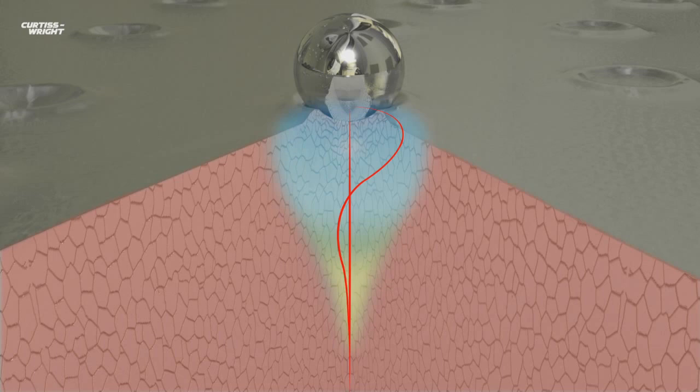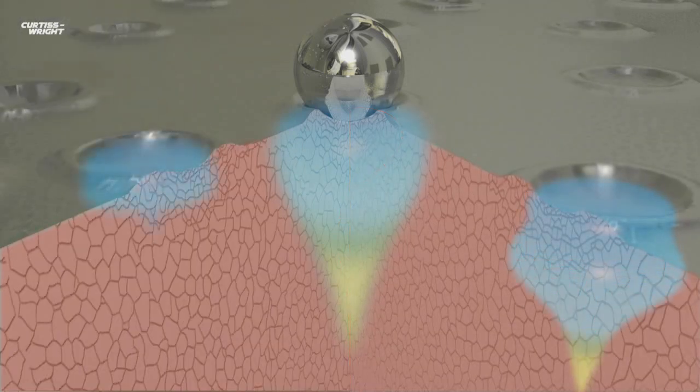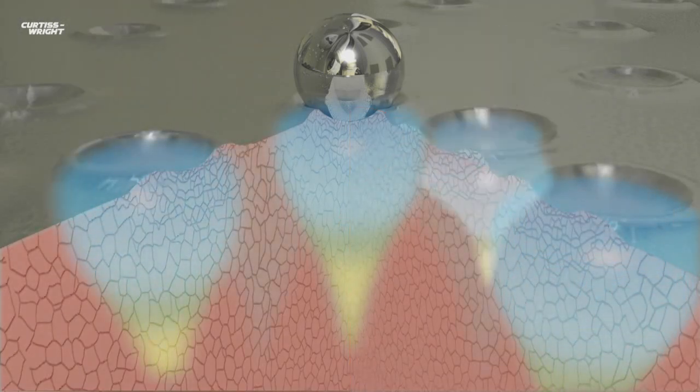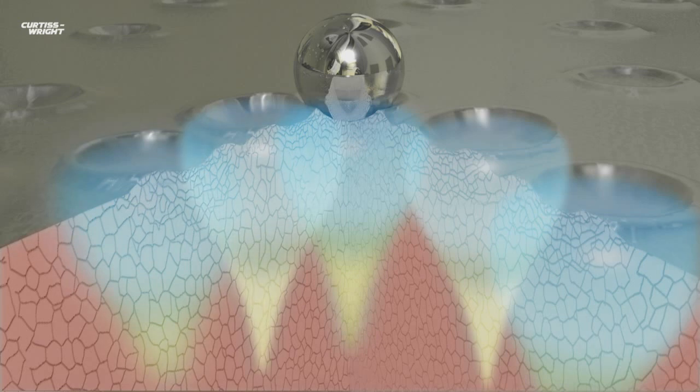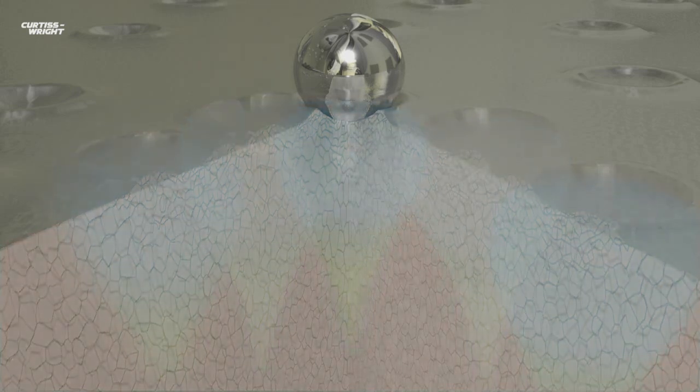Controlled shot peening can remove tensile stresses induced by machining, welding or heat treatment. Results following controlled shot peening show a dramatic improvement in both the life and strength of components, welds and materials.